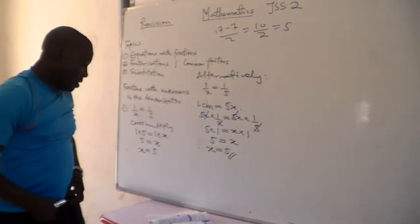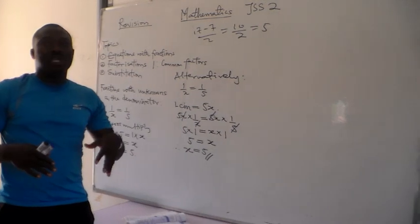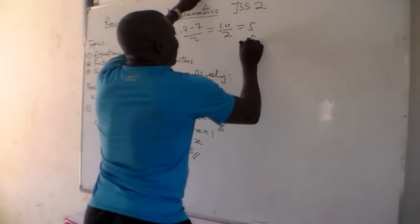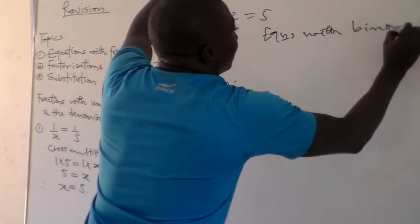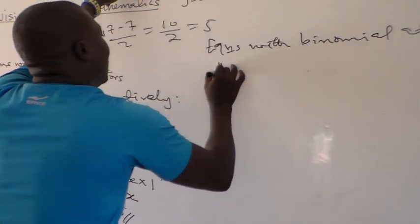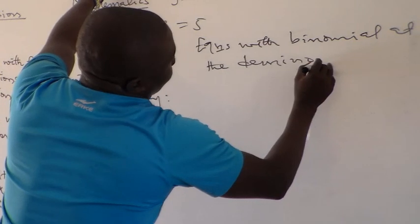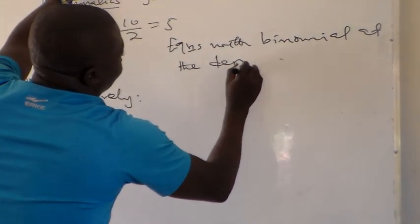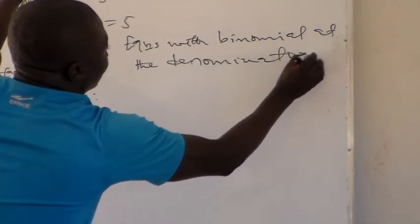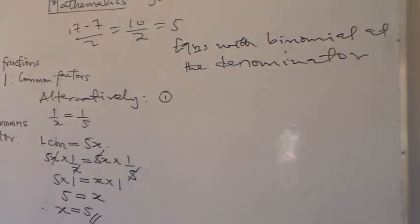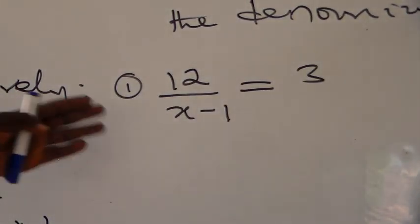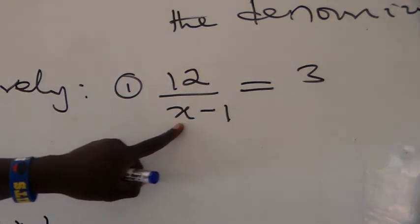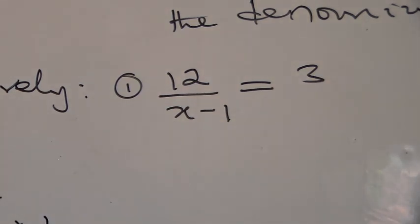We can also have equations where the denominator is a binomial. For example, 12 all over (x minus 1) equals 3. This is different from the two types of equations we have looked at because at the denominator we have a binomial. In this case, we make the 3 into 3 over 1 and then cross multiply.